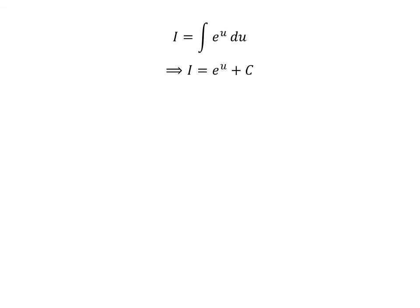We know the integral of e to the u with respect to u is e to the u, so I equals e to the u plus C. C is the arbitrary constant of indefinite integral. Never forget to add this constant.